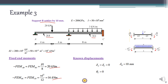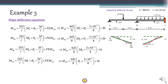The known displacements are: rotation at C is zero, vertical displacement at A and C are zero. However, the vertical displacement at B, delta_B, is 10 millimeters. Now write the slope deflection equations for the two spans — with two spans there will be 2×2 = 4 slope deflection equations.